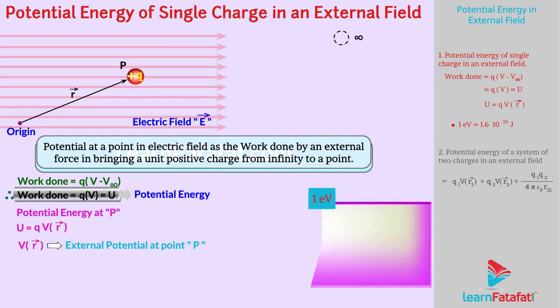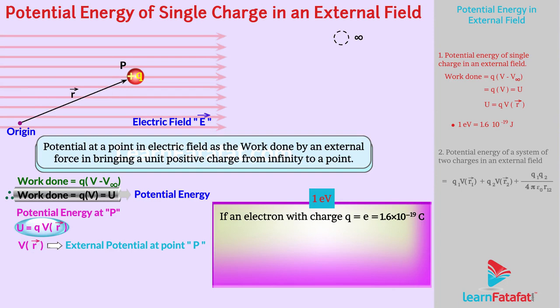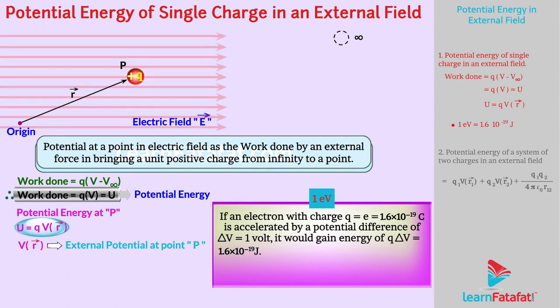Definition of one electron volt can be given with the help of this relation as follows. If an electron with charge Q equals to e equals to 1.6 into 10 raised to minus 19 coulomb is accelerated by a potential difference of delta V equals to 1 volt, it would gain energy of Q into delta V which is equal to 1.6 into 10 raised to minus 19 joules.